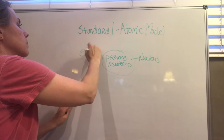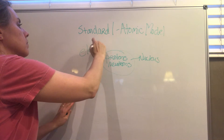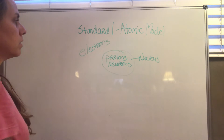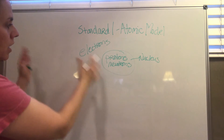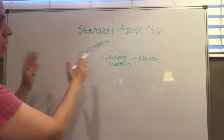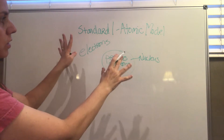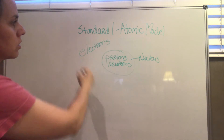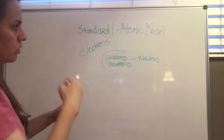The electrons are outside, usually at a great distance, but in a model like this we can only show them just around the nucleus.